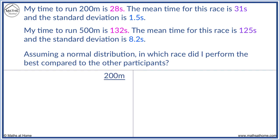For 200 metres, my score was 28. Mu was 31 and sigma was 1.5. The z-score for 200 metres was minus 2.